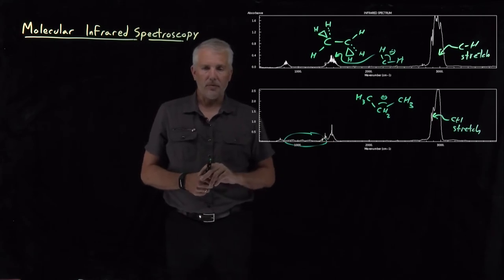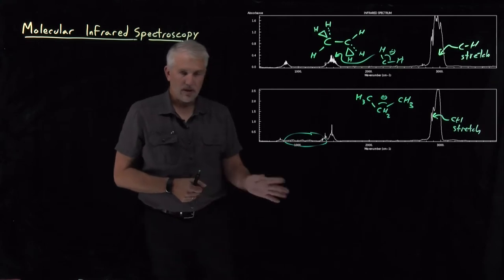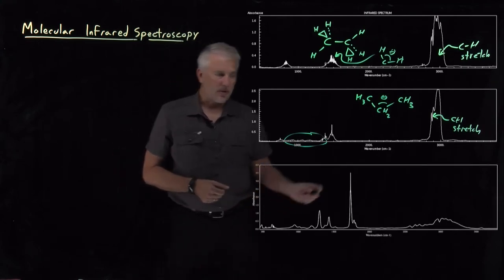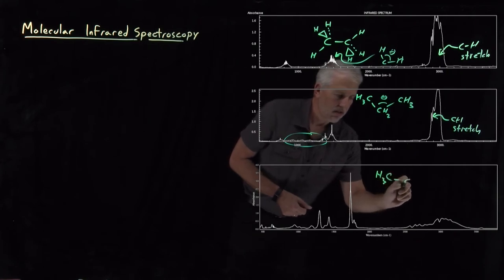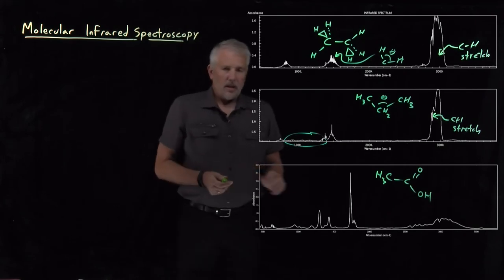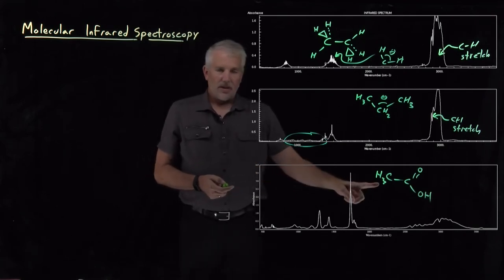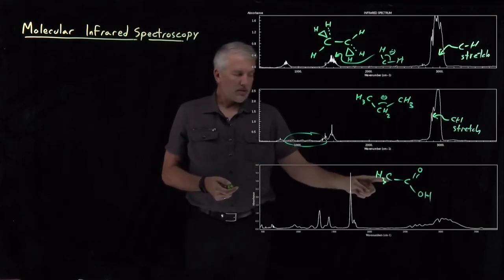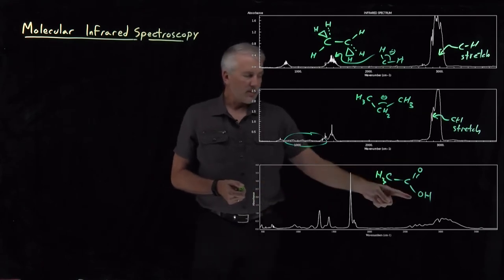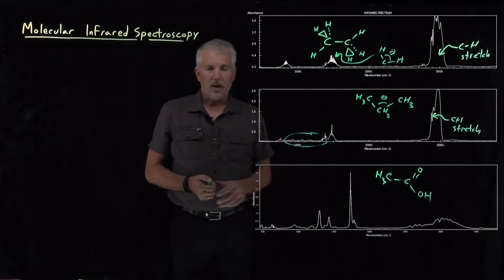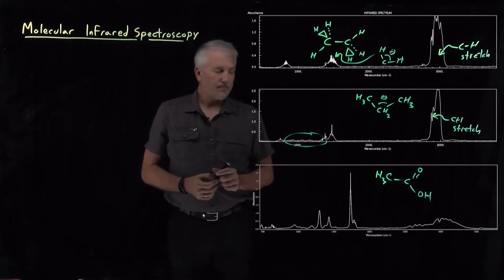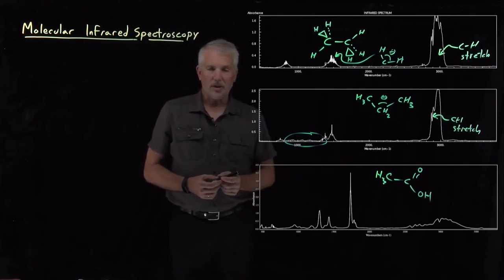On the other hand, if we move to a more complicated molecule that's not just an alkane, next I'll pull up the spectrum for acetic acid. Acetic acid has not just methyl groups and not just carbon-carbon bonds and carbon-hydrogen bonds, but it's also got oxygens. It's got OH bonds, it's got carbonyl bonds. It's got a larger variety of different types of chemical substituents and chemical groups in that molecule.